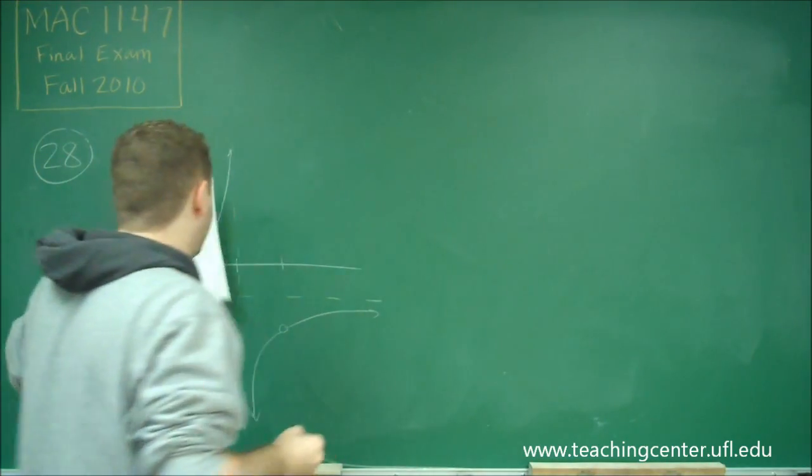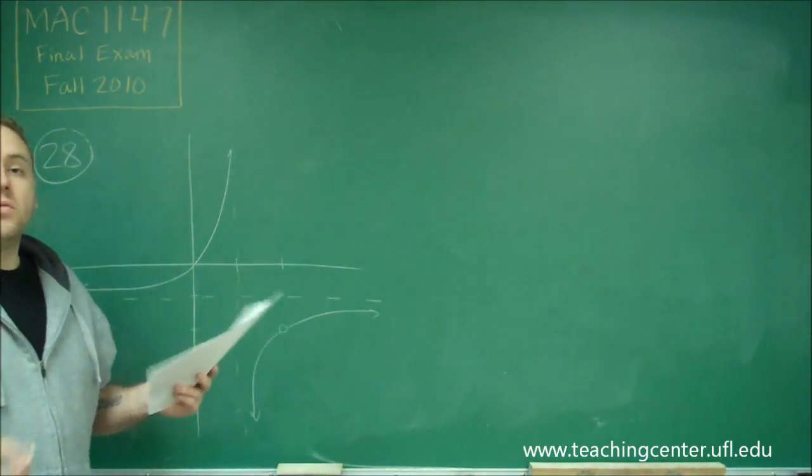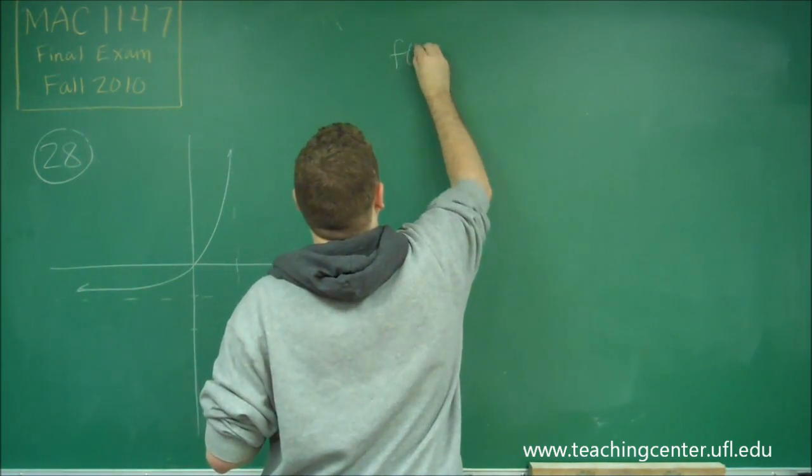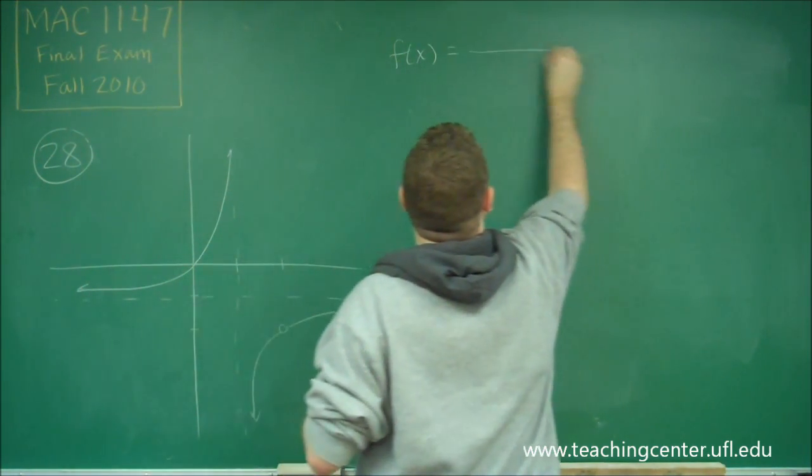So because we have a vertical asymptote and a hole, we know that this is going to be a rational function. So our f of x is going to be a fraction.